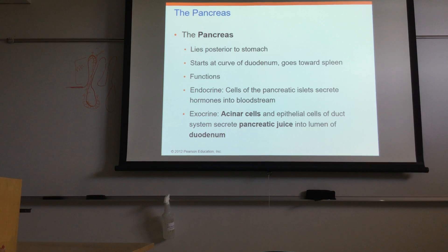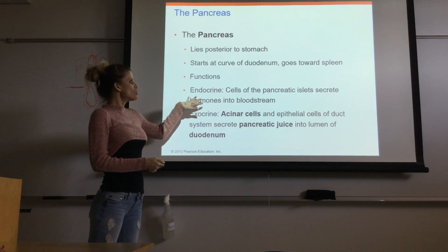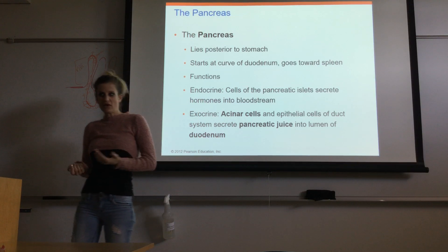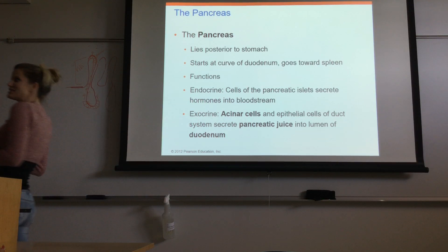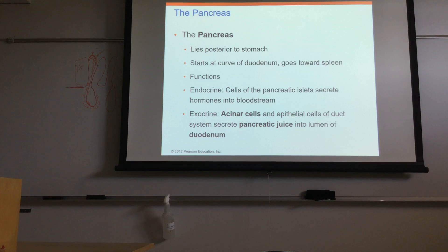The pancreas has both endocrine and exocrine functions. The endocrine pancreas is a very small part — only about one percent — and it releases hormones from the pancreatic islets, or islets of Langerhans, including insulin and glucagon, which are critical for glucose metabolism. There are also F-cells, delta cells, and pancreatic peptide, but the main focus in endocrine was glucose.